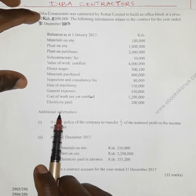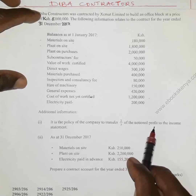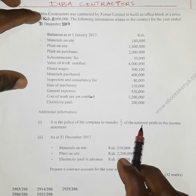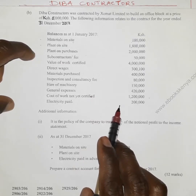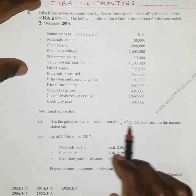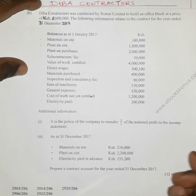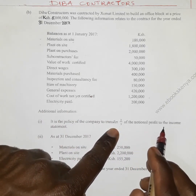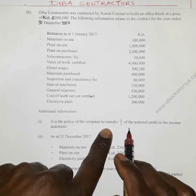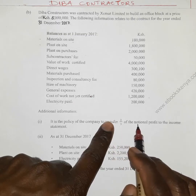We are given additional information: it is the policy of the company to transfer two-thirds of the notional profit to the income statement. Notional profit refers to the profit arising from the difference between the value of work done and the cost of work done — similar to gross profit in an income statement. The two-thirds transferred is called profit taken, and the remaining one-third is profit not taken, also called profit in suspense.